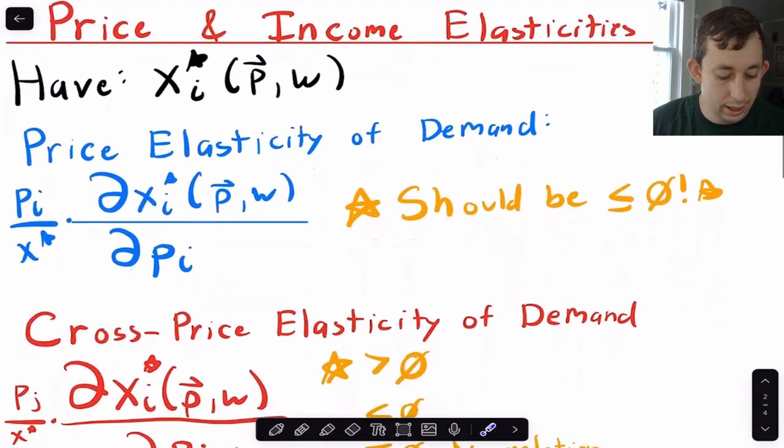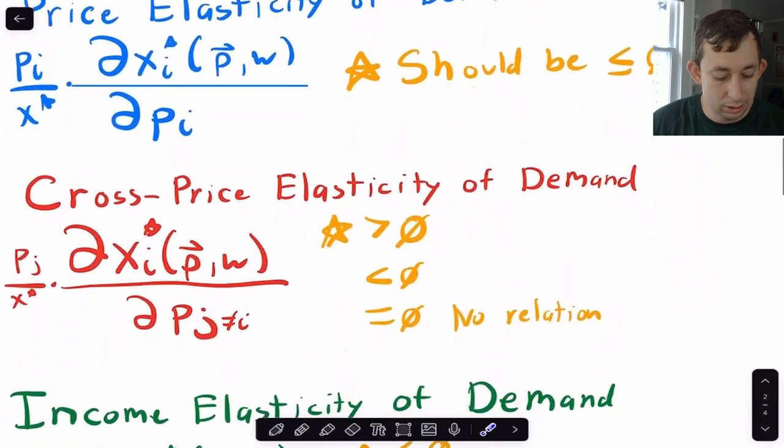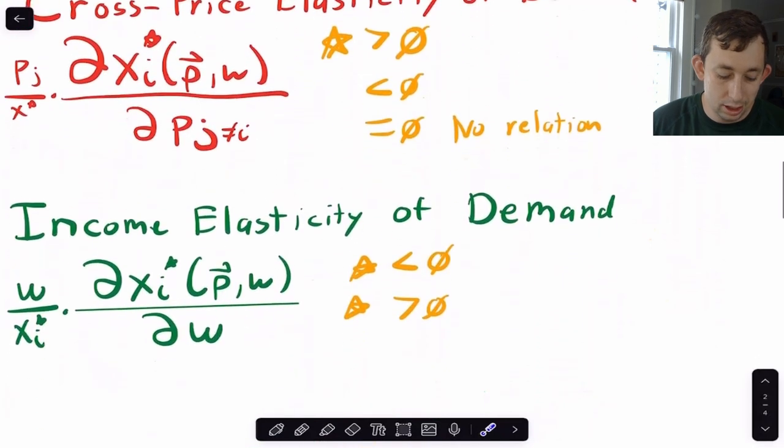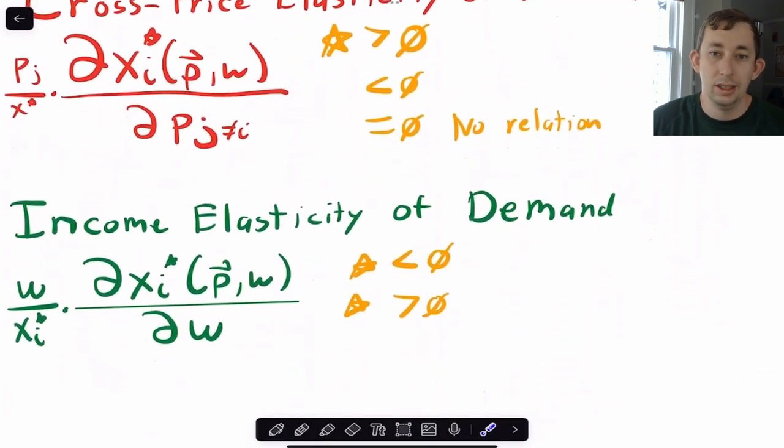So getting right into it, I'm going to talk about some elasticities, three in particular. First, I'm going to talk about the price elasticity of demand, or the own price elasticity of demand. Then I'm going to talk about the cross-price elasticity of demand, which is going to tell us something about complements and substitutes. Then we'll talk about the income elasticity of demand, which is going to tell us something about inferior or normal goods.